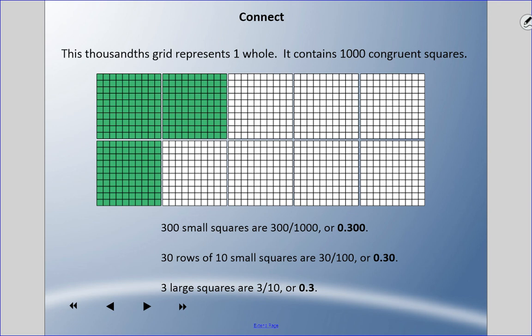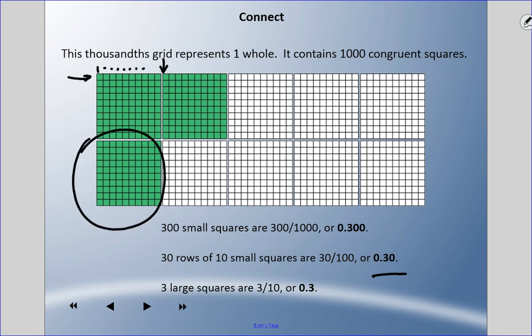We can also use a thousandths grid. Each full grid represents one whole and contains one thousand congruent — meaning equal-sized — squares. I have 300 small squares colored, so that's 300 thousandths, or 0.300. I can also think of it as rows of ten — there are 30 rows colored, so 30 hundredths. Or I can see it as three large columns out of ten, which is three tenths.